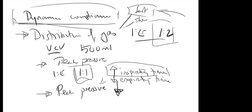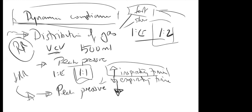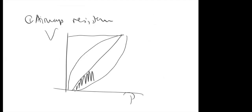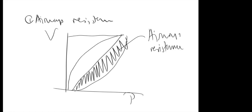Airways resistance is the really big factor in dynamic compliance — it includes airways resistance, whereas in static compliance at steady state with no airflow, airways resistance is negligible. Work of breathing overcomes both elastic and non-elastic resistance. Non-elastic resistance consists of airways resistance and viscoelastic resistance. With dynamic compliance, it includes both elastic and non-elastic resistance.